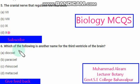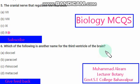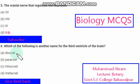Which of the following is another name of the third ventricle of the brain? The right option from these is option A.